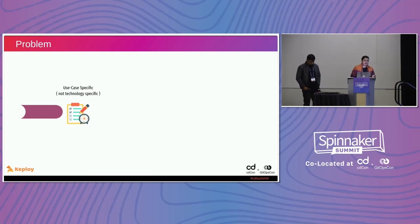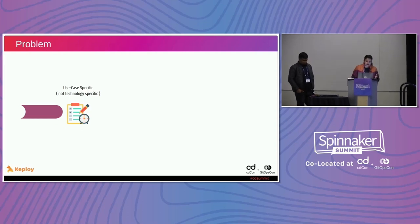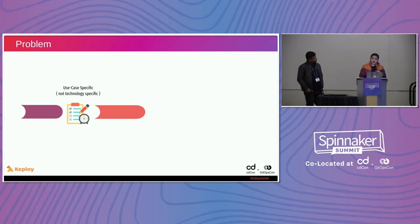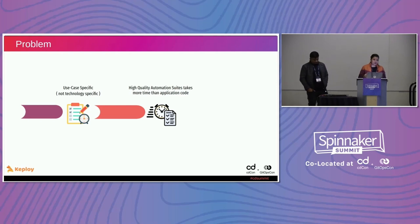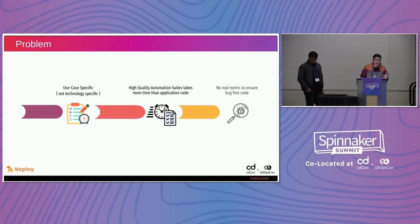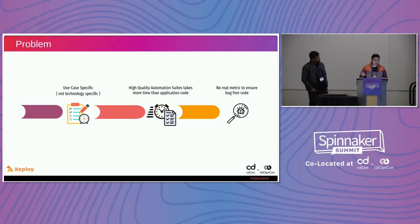You cannot really write a test like a script that will work for every application. You need to spend a lot of effort and time to actually write high-quality automation test suites — sometimes even more than you would spend on developing the application. And even after that, you cannot ensure one metric that will guarantee bug-free code or no defects leaking to production. That's the problem in achieving an autonomous testing cycle in the CI/CD process.